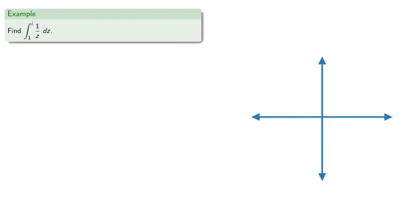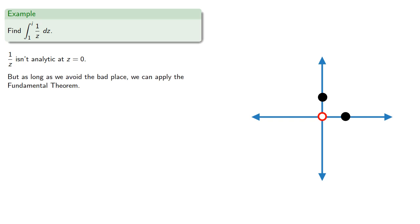So let's find the integral of 1 over z from 1 to i. Now, 1 over z isn't analytic at z equals zero, but as long as we avoid the bad place, we can apply the fundamental theorem. Since there is a connected region R that includes 1 and i, where 1 over z is analytic.